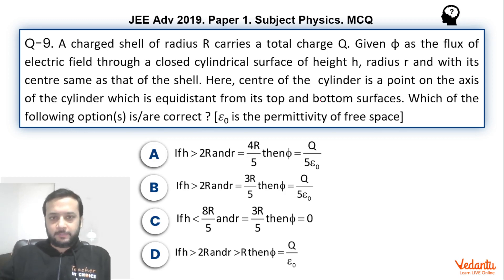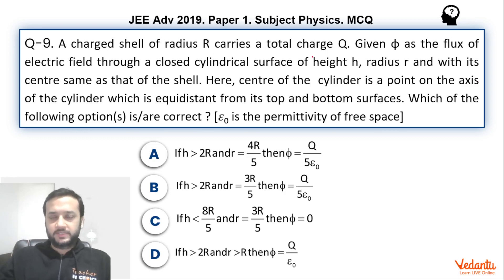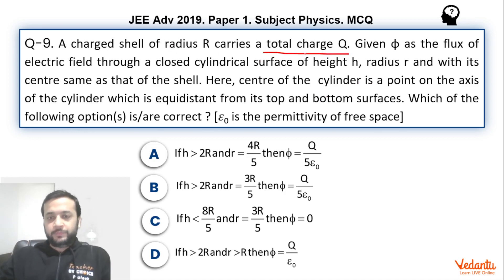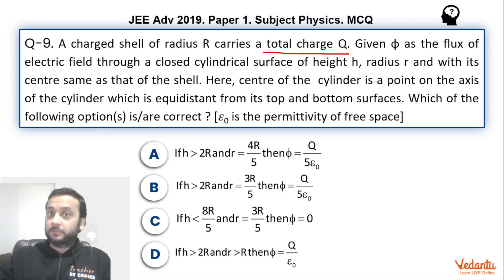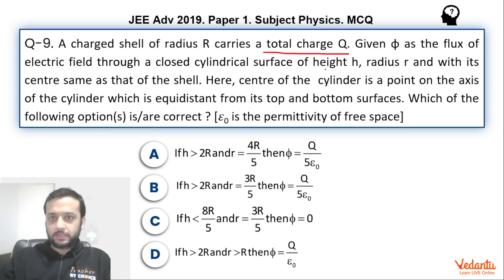There's a charge shell of radius r which carries a total charge q — read this word carefully — total charge q. It's not written that the charge has been uniformly distributed, mind you. Now the flux through the closed cylinder of height h and radius r, where this cylinder has been kept symmetrically.